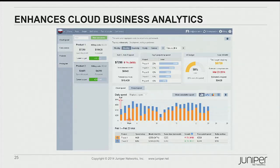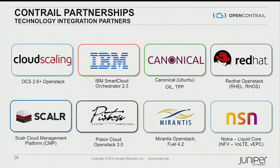With that granularity and visibility comes the ability to manage on the business side. Working with partners like Scalar, who do cloud management and cost per project or cost per tenant — pulling in purely REST API information — all the data shown in the UI comes directly off the API server, and a lot of our partners are able to pull it into their business analytics. No one vendor is going to do this on their own. We've been working with a lot of OpenStack integrators, and we recently announced a partnership with Nokia for VEPC and voice over LTE infrastructure using their liquid core. These are the system-level partners we've been working with to enable the various use cases discussed.